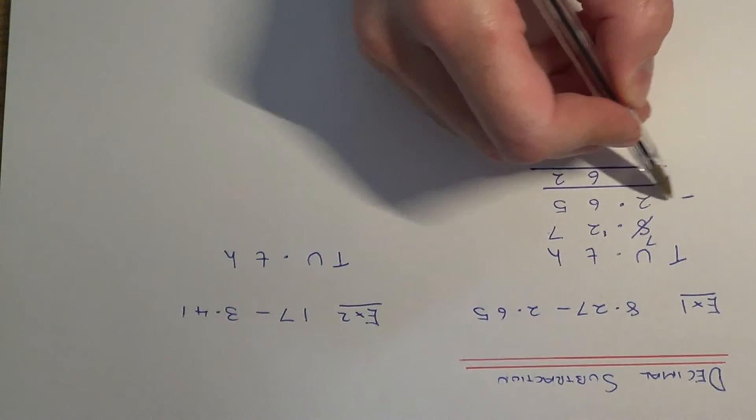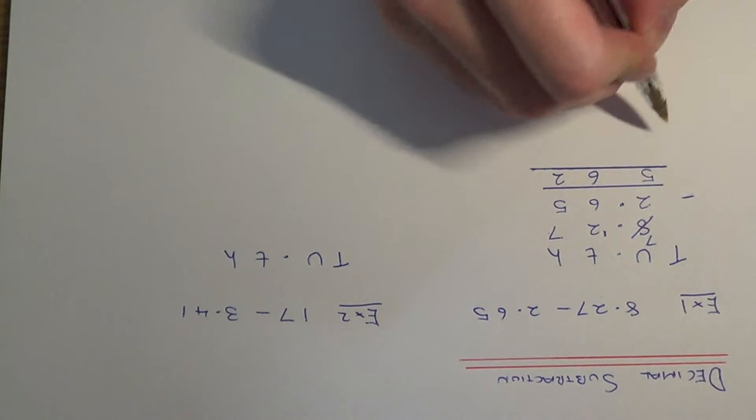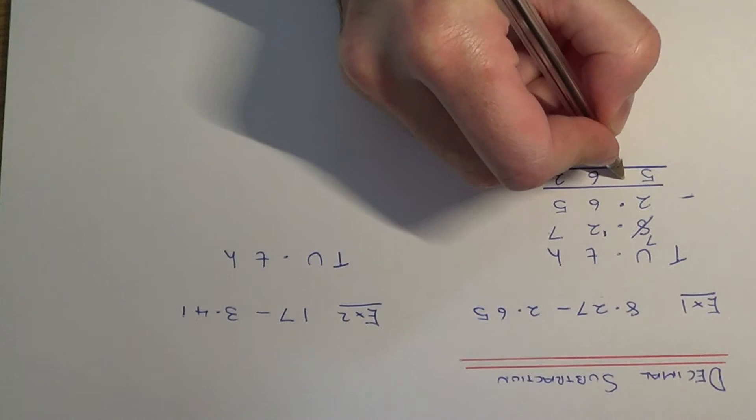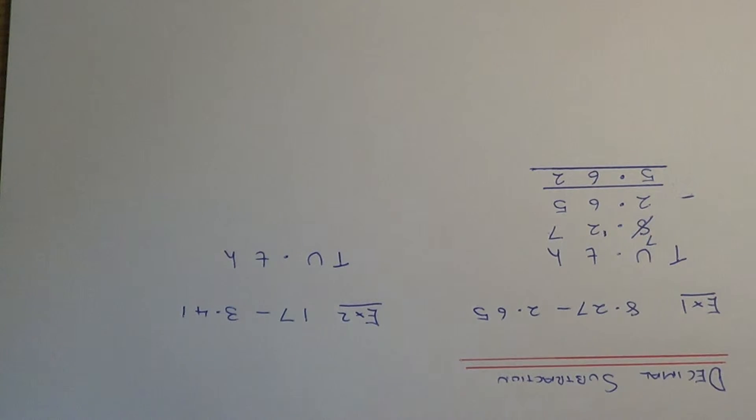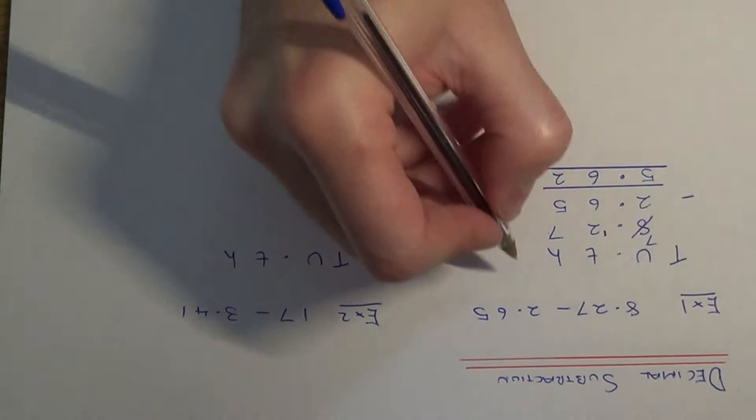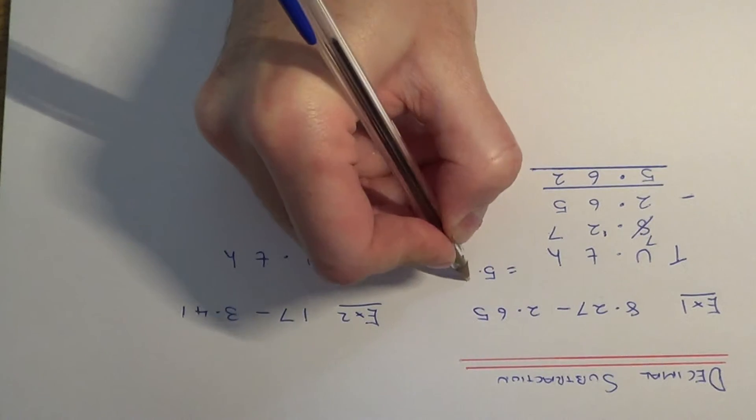and our final column we have 7 take away 2, which is 5, and keep the decimal point in line in your answer. So our final answer is 5.62.